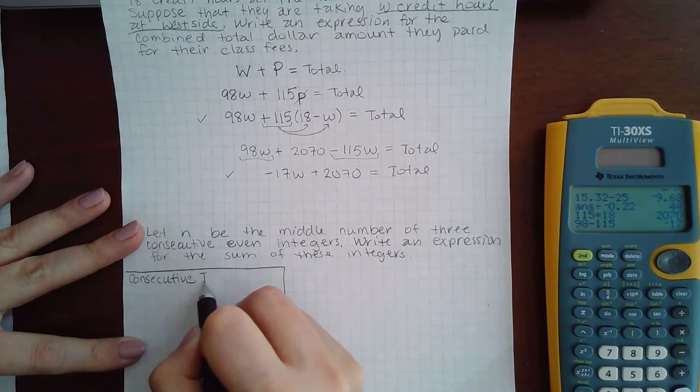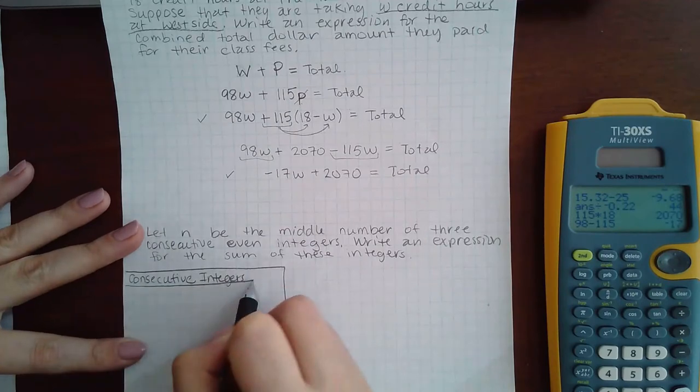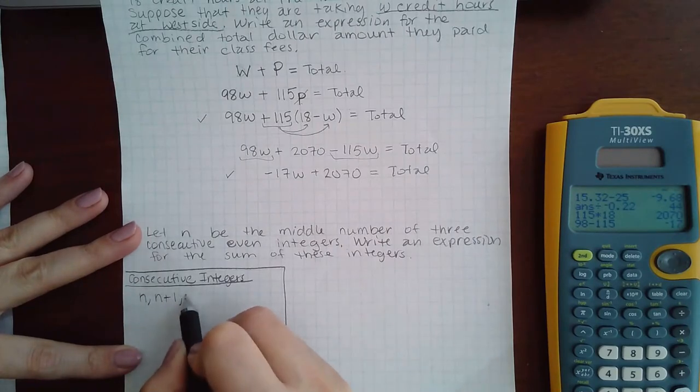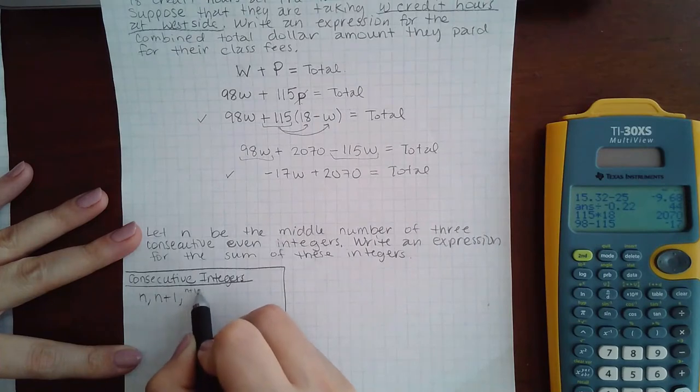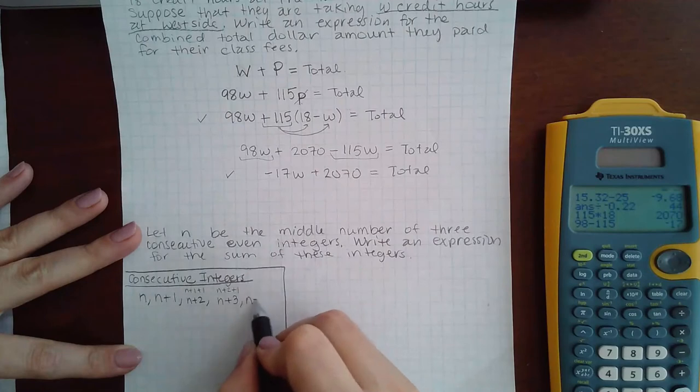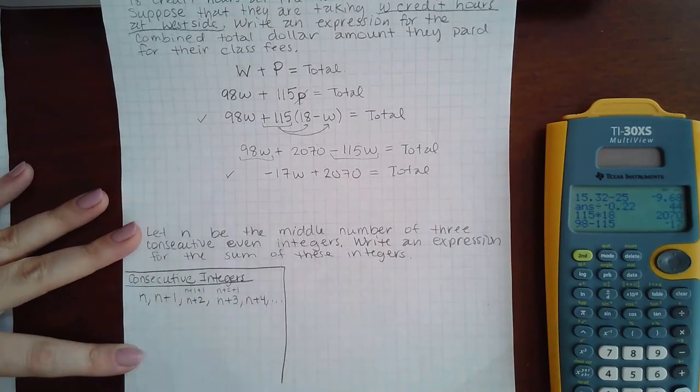If I'm talking about straight consecutive integers, think of that as like page numbers, right? You start with one page. The next page is going to be one more, n+1. The next page is going to be one more than that, which is n+2. The next page is going to be that previous page plus one more, which is n+3, and so on depending on how many pages you're looking at.